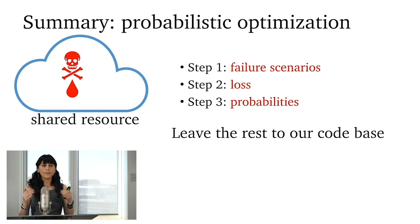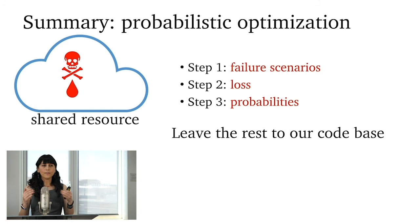And then you could leave the rest to our code base. What we're going to do is that behind the scenes, we change the objective function into one that minimizes loss with a given probability that's an input to the problem. And then what this means is that after solving this optimization function, we can serve more users and hence reduce the cost by a factor of three.